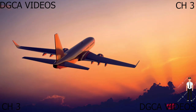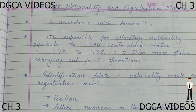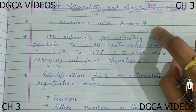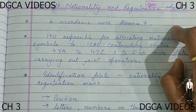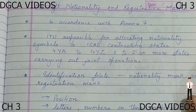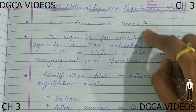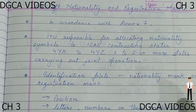Without wasting much time, let's get started. We'll be starting with aircraft nationality and registration marks. I have made various points and we'll be going one by one, explaining each one of them. It is in accordance with Annex 7 of the ICAO standards. ICAO is the International Civil Aviation Organization — it is a UN agency which regulates civil aviation internationally. It has 19 annexes, out of which the seventh one is responsible for putting out the standards for nationality and registration marks for aircraft.